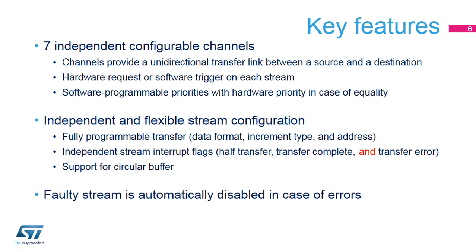The DMA controller has seven channels in total, each dedicated to managing memory access requests from many peripherals. Each channel has flexible hardware requests and support for software triggers. The channels' software priority is programmable, and a hardware priority is used in case of equality. Channels are independently configurable, each with its own data format, increment type, and data address for both source and destination.